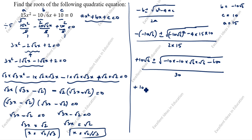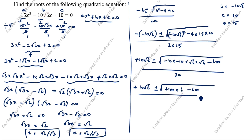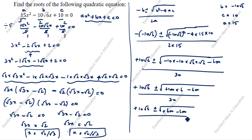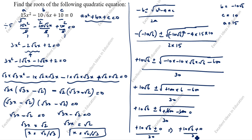So we have 10√6 plus or minus √(600 minus 600), divided by 30. Since 600 minus 600 equals 0, the square root term vanishes. This gives 10√6 plus or minus 0, divided by 30. Both the plus and minus cases give 10√6 divided by 30.